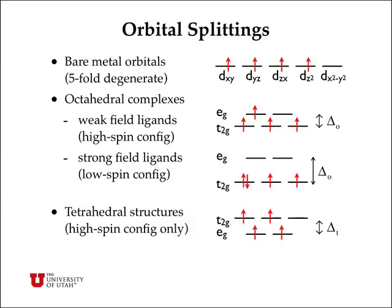As a reminder, the five d orbitals in the bare metal ion all have the same energy — they're five-fold degenerate. But when you bring six ligands up in an octahedral complex, these five orbitals split into two groups. There's a t2g group of three orbitals that lie at lower energy, and an eg group of two orbitals that lie higher in energy. The eg and t2g are just symmetry labels. Weak field ligands have a small splitting compared with the energy required to pair two electrons in a single orbital, leading to high spin complexes where all five orbitals are singly occupied before you start pairing electrons in the t2g orbitals.